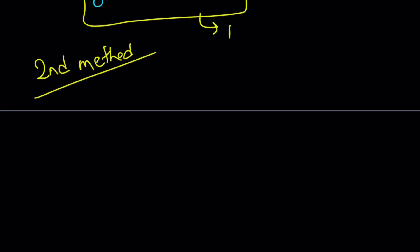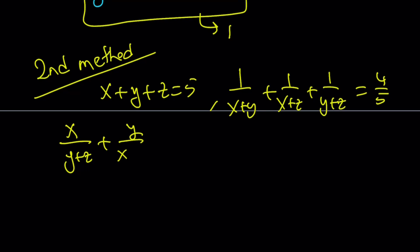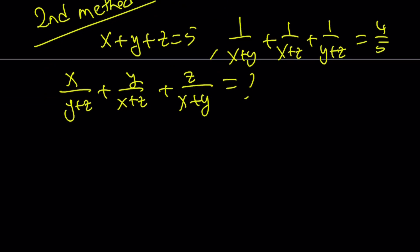So my second method, I'm going to rewrite the equation so you can see what we have. We have x plus y plus z is equal to 5. 1 over x plus y, 1 over x plus z, and 1 over y plus z is equal to 4 fifths. And we're trying to evaluate x over y plus z plus y over x plus z plus z over x plus y. This is what we're trying to evaluate. So here's what we're going to do. We're going to take the expression that we're trying to evaluate, which is this one.